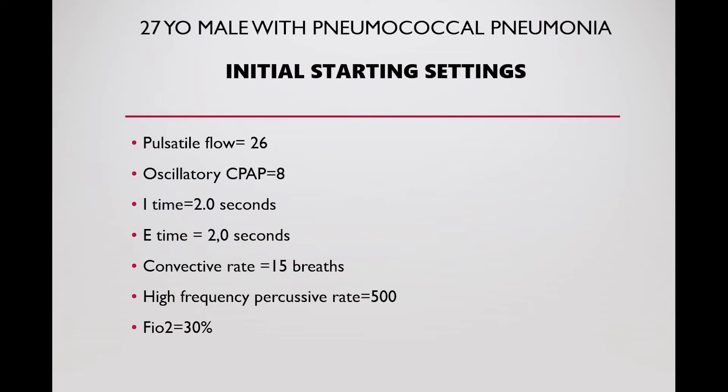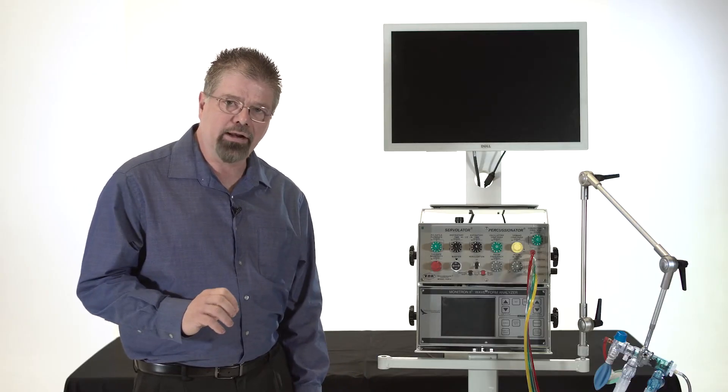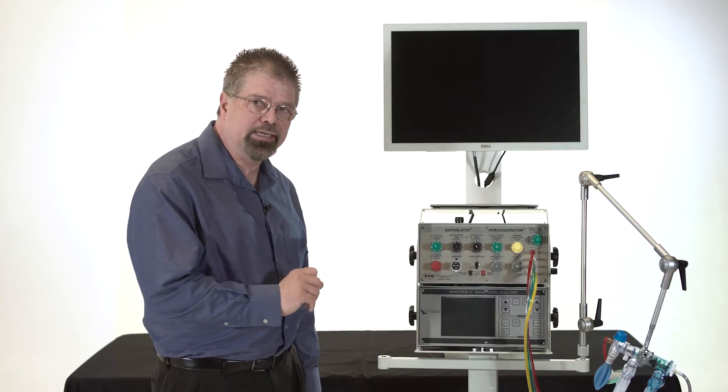Okay, it looks like we have a 27-year-old male with pneumococcal pneumonia. Let's look and see what the initial settings we're going to use. Looks like we're going to do a pulsatile flow of 26 over an oscillatory CPAP of 8. We're going to do an I time of 2 seconds, an E time of 2 seconds, a convective rate of 15, a high frequency rate of 500, and we'll probably start at about 60% FiO2. Let's go over to the ventilator and actually turn it on and see if we can set these settings up.